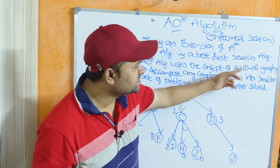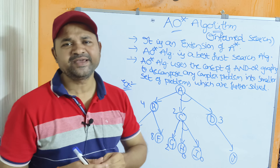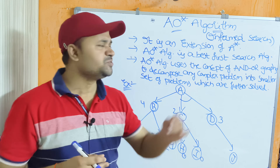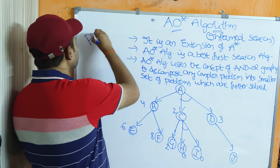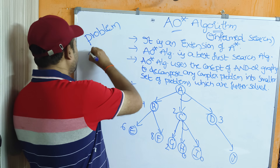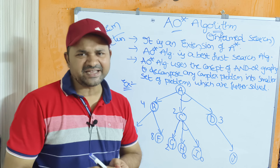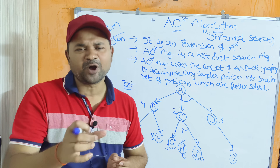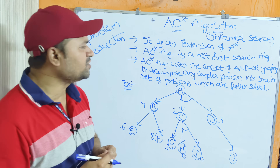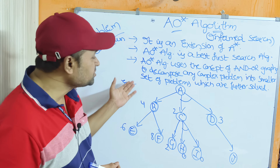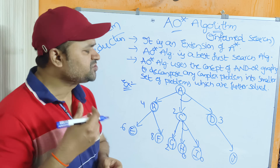AO* algorithm uses the concepts of AND-OR graphs, where A means AND and O means OR. It uses a concept called problem decomposition, which means the given complex problem will be divided into several sub-problems, and each sub-problem will be solved separately. AO* algorithm uses AND-OR graphs to decompose any complex problem into a smaller set of sub-problems which are further solved.